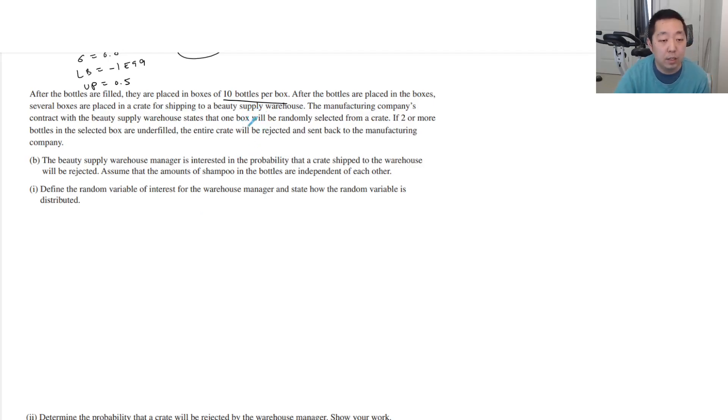So we have 10 bottles in a box, and if I randomly pick a crate and two of those 10 bottles or more are underfilled, then the entire crate is rejected. So out of 10 bottles, if two or more are underfilled, then we have a problem. I want to know what's the probability. Let's say x is the number of bottles that are underfilled. I want the probability that x is greater than or equal to two.